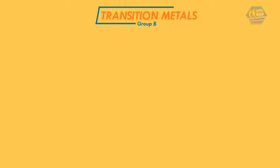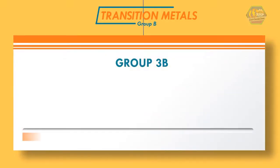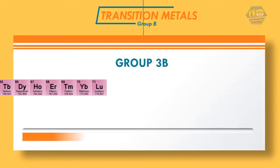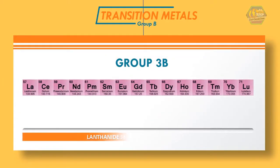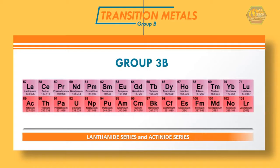There are also elements which are separated but still included in Group 3B. These are called the lanthanide series, located in period 6, and the actinide series, located in period 7.